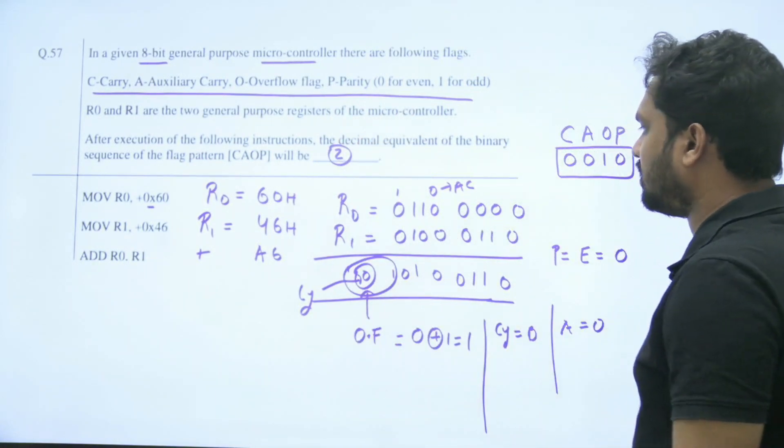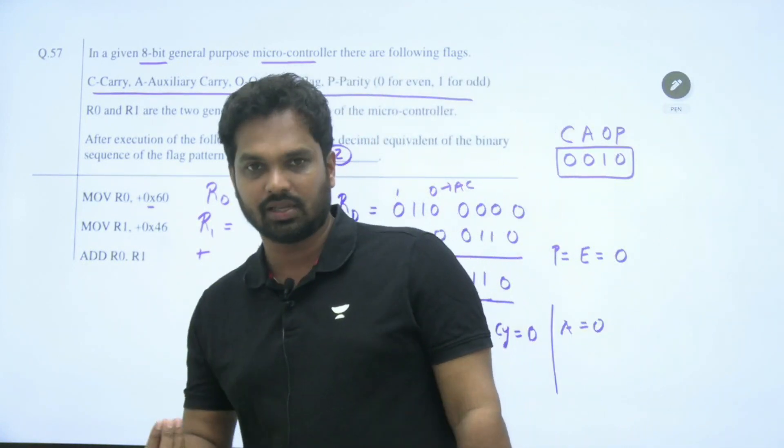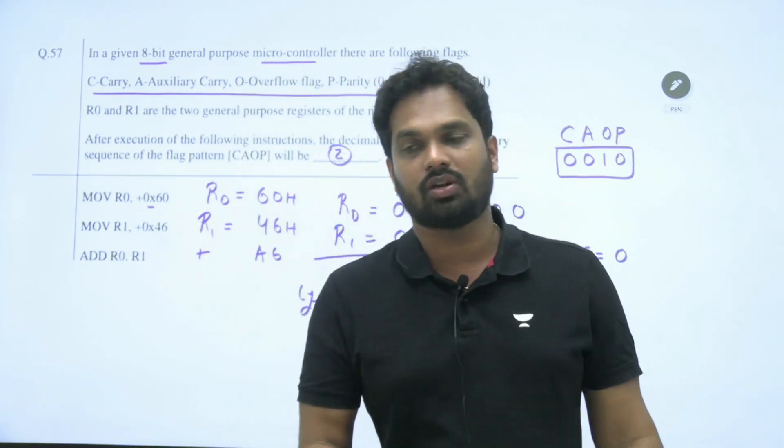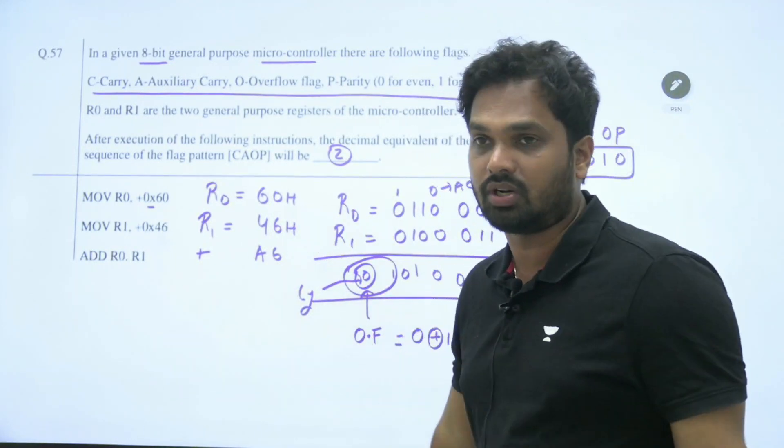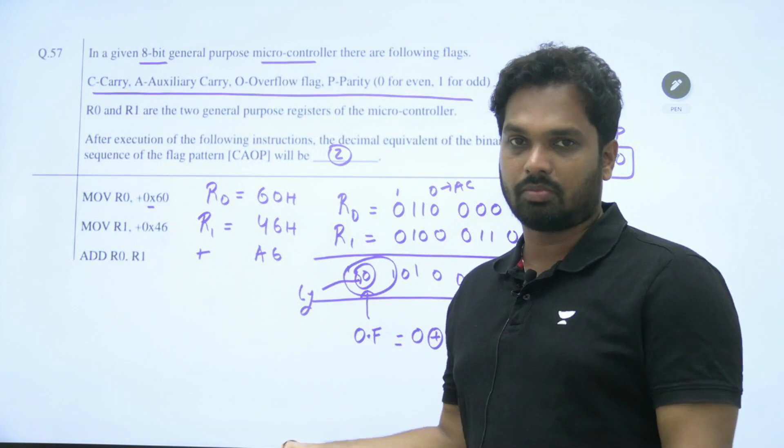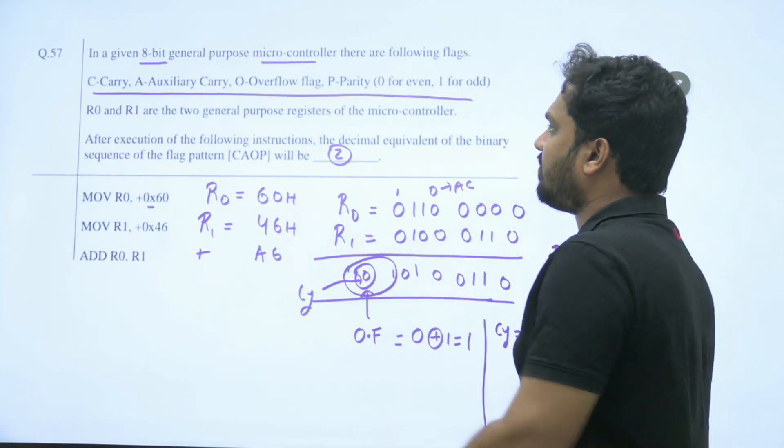The decimal equivalent of this is 2. Fine sir, no problem, but basic digital knowledge is needed. If you know number systems, you can answer it. Even number system is not specified in your digital circuits, they can ask you from number systems.